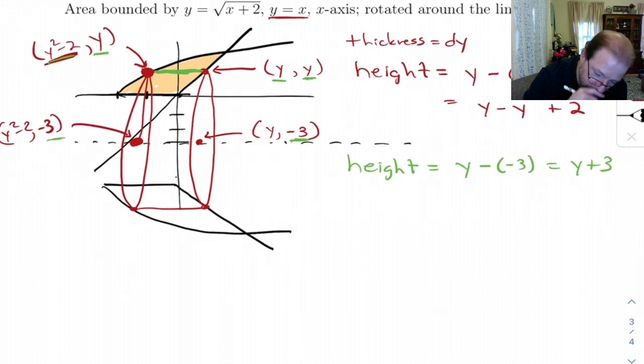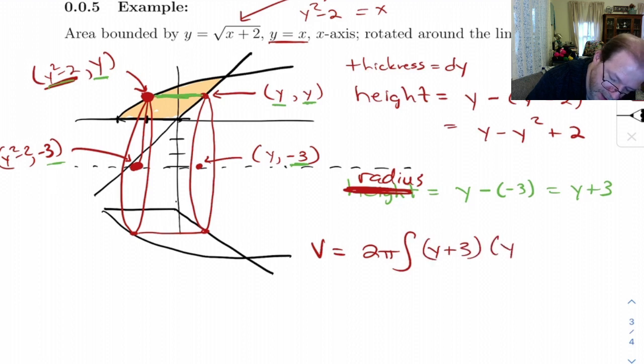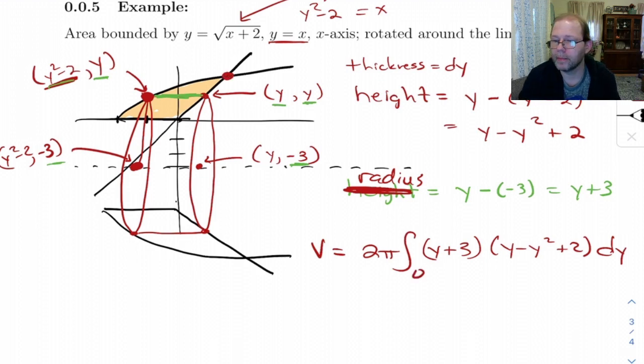All righty. So now, we've got all we need to do the volume. The volume is going to be 2 pi integral of radius, oh, I called that height again. That's not height, that's radius. So radius times height times thickness. And let's see, our original area goes from here up to here. So this is at y equals 0. And what's the y-coordinate up here?